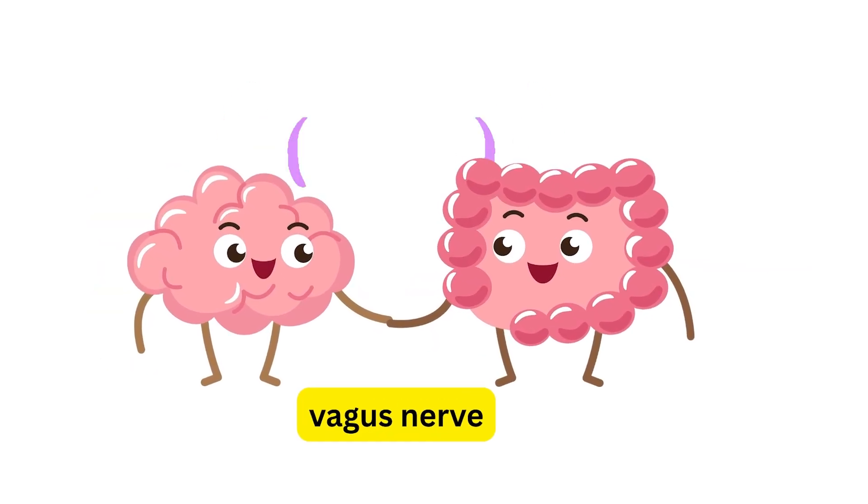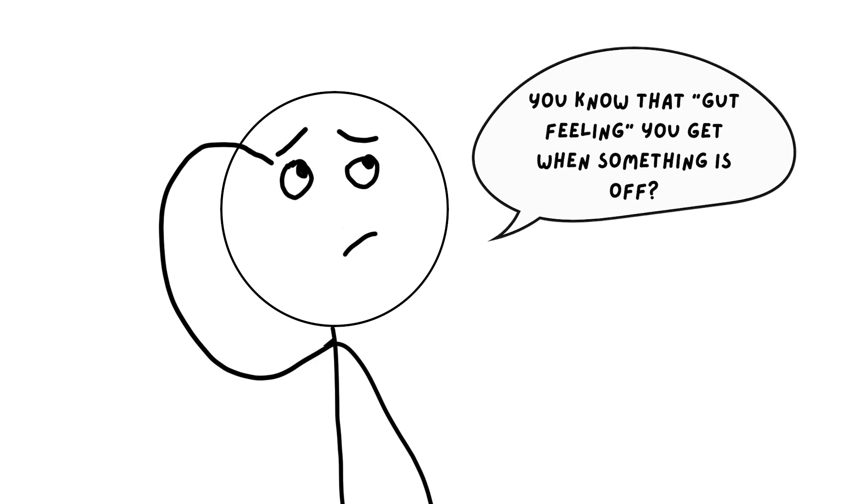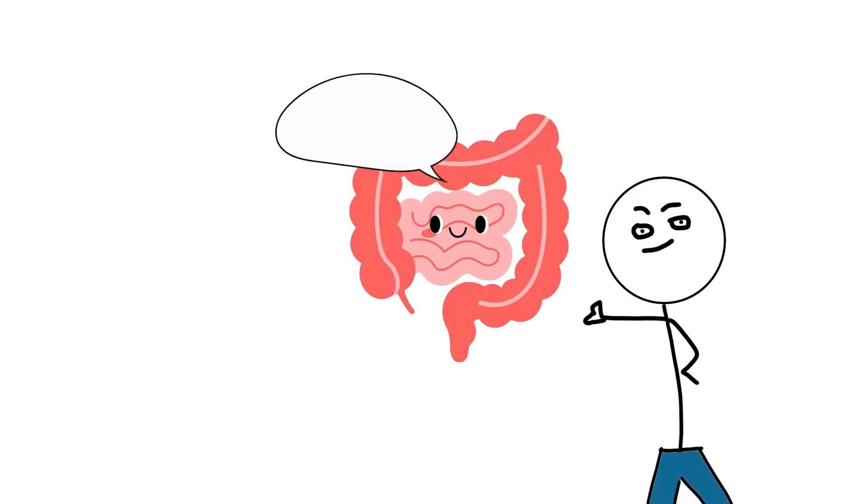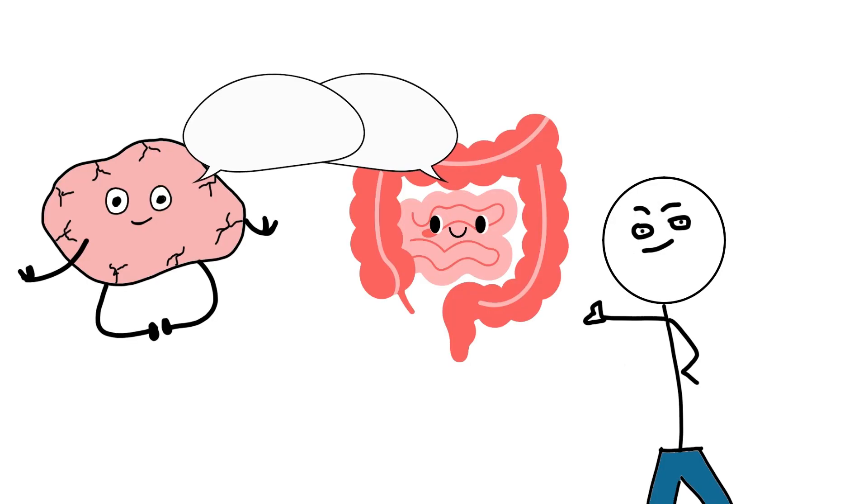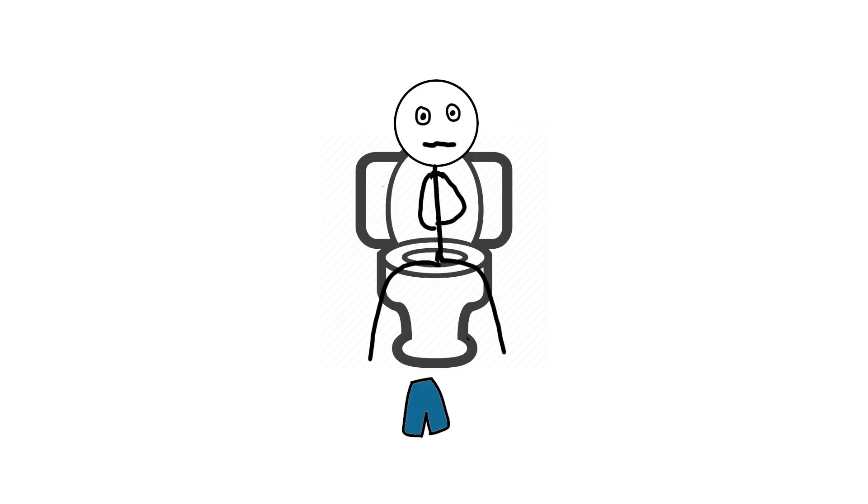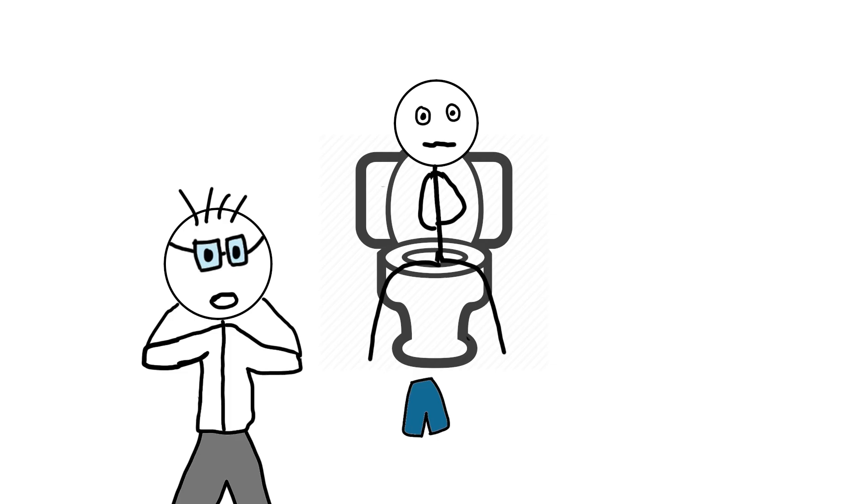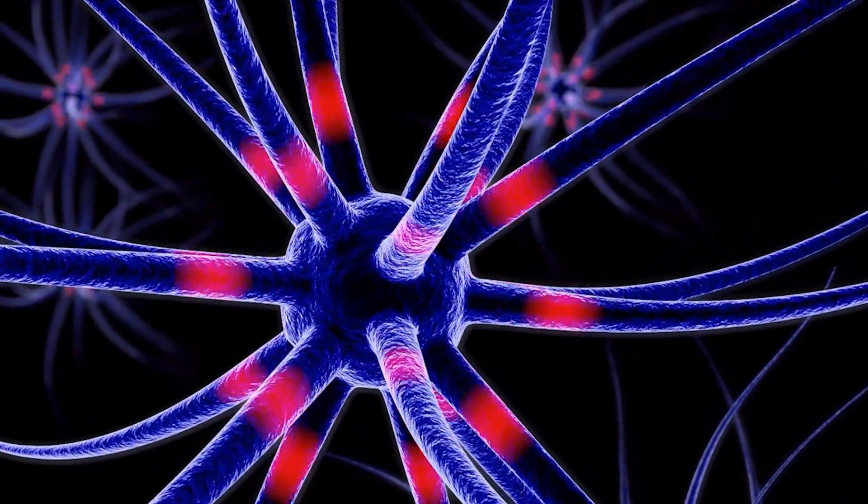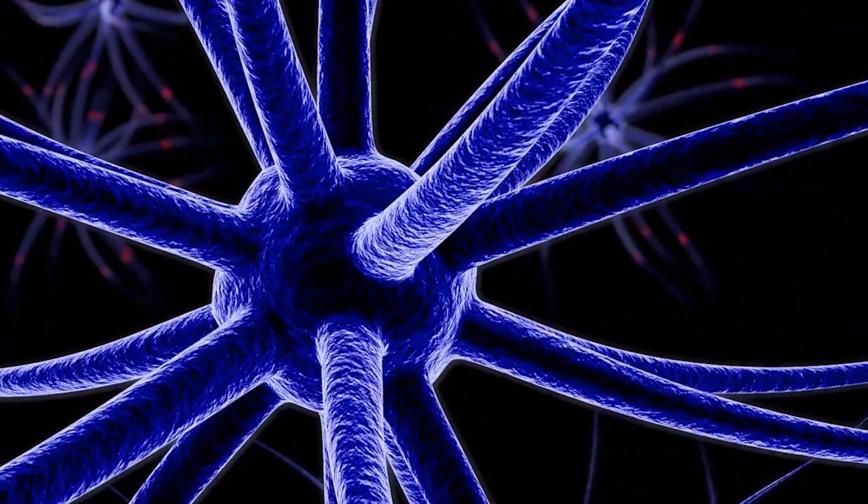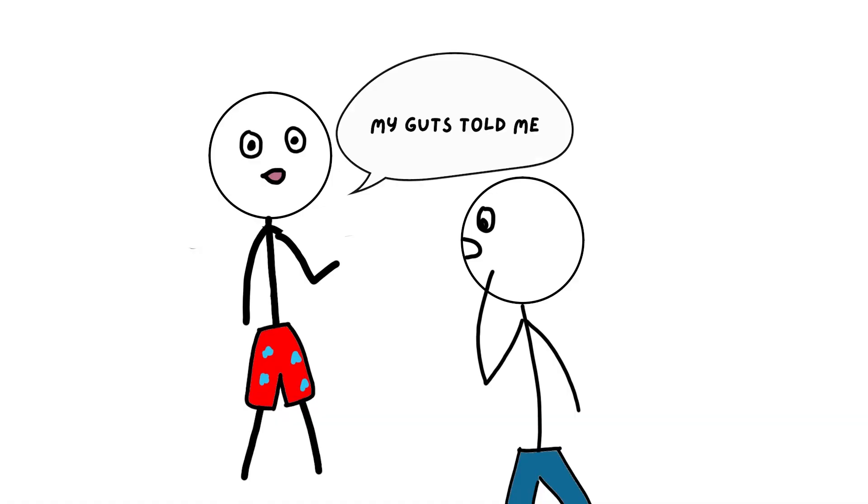You know that gut feeling you get when something is off? That might be your second brain talking. It's not your skull brain doing the talking alone. Gross factor aside, thinking about guts and neurons, it's amazing you're carrying a neural network in your intestines that works semi-autonomously. So next time you say 'my guts told me,' you might be literally correct.